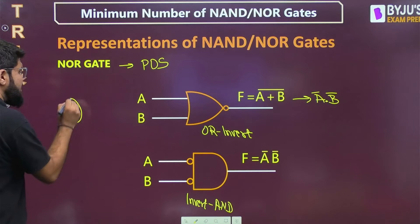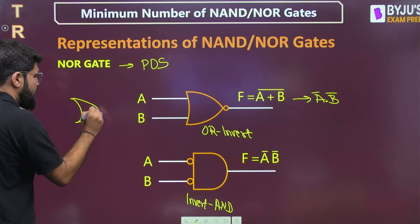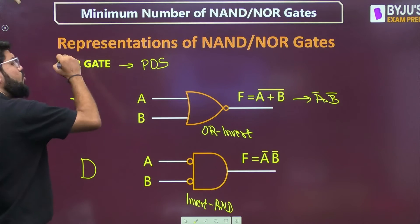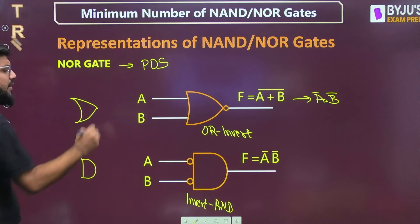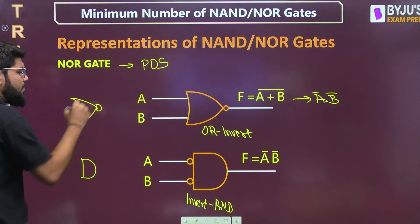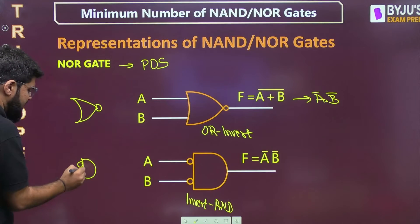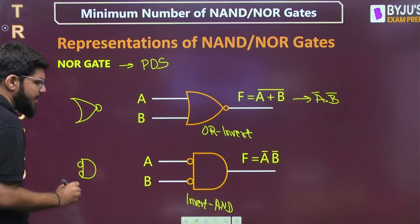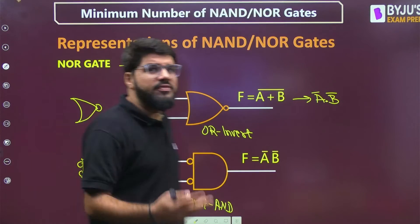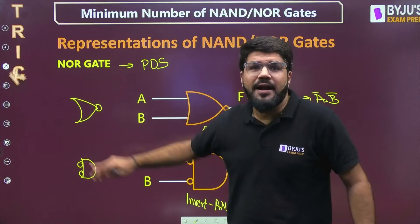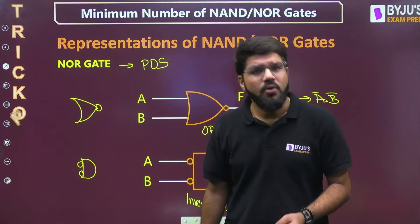In any given circuit, if you have OR gates and AND gates and want to convert into NOR gates: place the bubble at the OR gate output, and place the bubbles at the AND gate inputs. Both are now one single NOR gate.